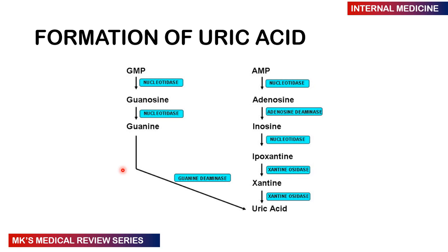Before we dive into details of what gout is, I want you to have a perspective of where uric acid comes from. Inside the nucleus of many different cells in the body you have the genetic material — your DNA, which can also be used to make RNA — and these are made up predominantly of nucleic acids, pretty much purines and pyrimidines. Uric acid is mostly coming from purine metabolism. We have guanosine monophosphate and adenosine monophosphate, which are components of nucleotides.